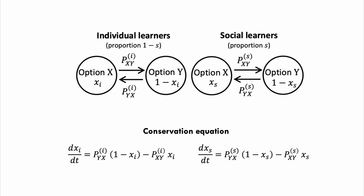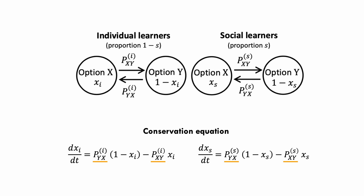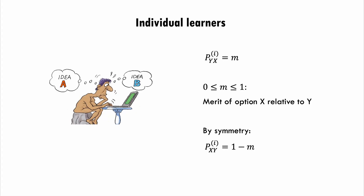We have the same picture for social learners and the same conservation equation. The only difference is that the subscript and superscript i from the first equation is changed to s, which denotes the variables for social learners instead of individual learners. The remaining task of the model is to figure out these four transition rates, and then we can solve for the behavior of the system. The transition rate for individual learners is defined as follows: the probability of an individual transitioning from option y into option x relates to what we call the merit of option x relative to y.